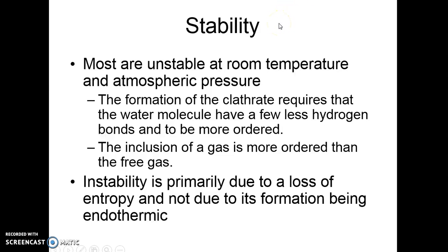Most clathrate hydrates are unstable at room temperature and atmospheric pressure. The conditions for them to form require the water to have fewer hydrogen bonds — a higher energy situation — and having water organized around another molecule is more ordered, which is a loss of entropy, making it less likely.